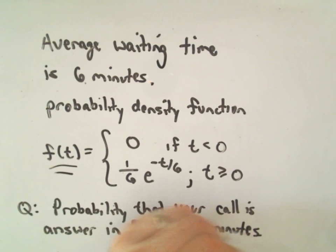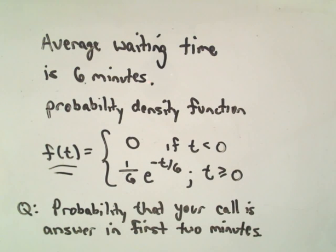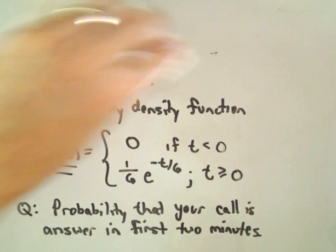So intuitively, I mean, if I have to wait an average of six minutes, intuitively I wouldn't expect there to be a very high probability that my phone call would get answered in the first two minutes. But let's compute exactly what it is.